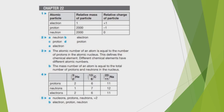Identify the following particles: an uncharged nucleon — answer: neutron. The particle with least mass — answer: electron. The particle with the same mass as a neutron — answer: proton. The particle with the same amount of charge as an electron — answer: proton (equal magnitude, opposite sign).